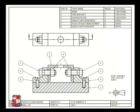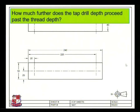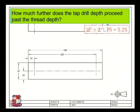This is the top view of this assembly drawing, and this shows the sectional plane for this component. What is the tap drill size for M12 by 1.75 thread? Yes, the tap drill size is 10.3. How much further does the tap drill depth proceed past the thread depth? 3P equals 3 times 1.75, that is 5.25.